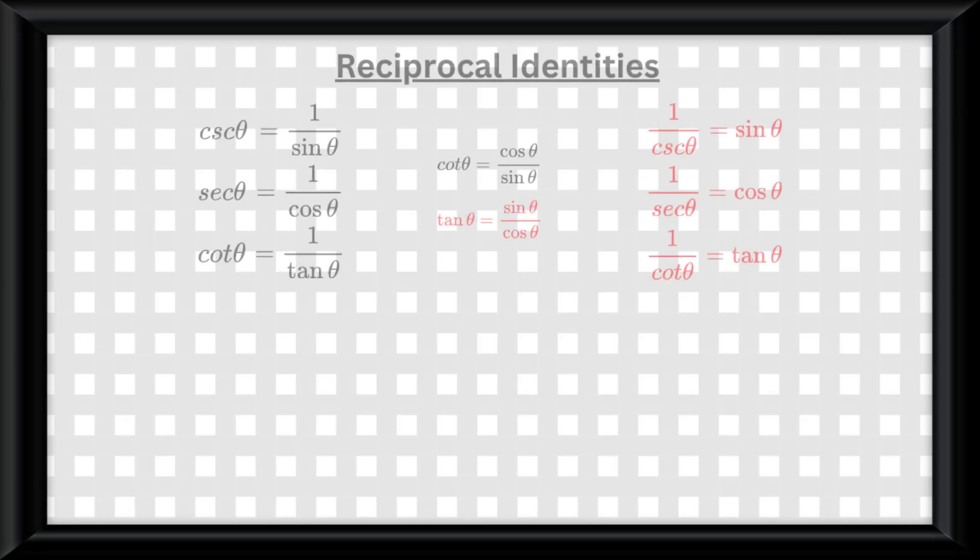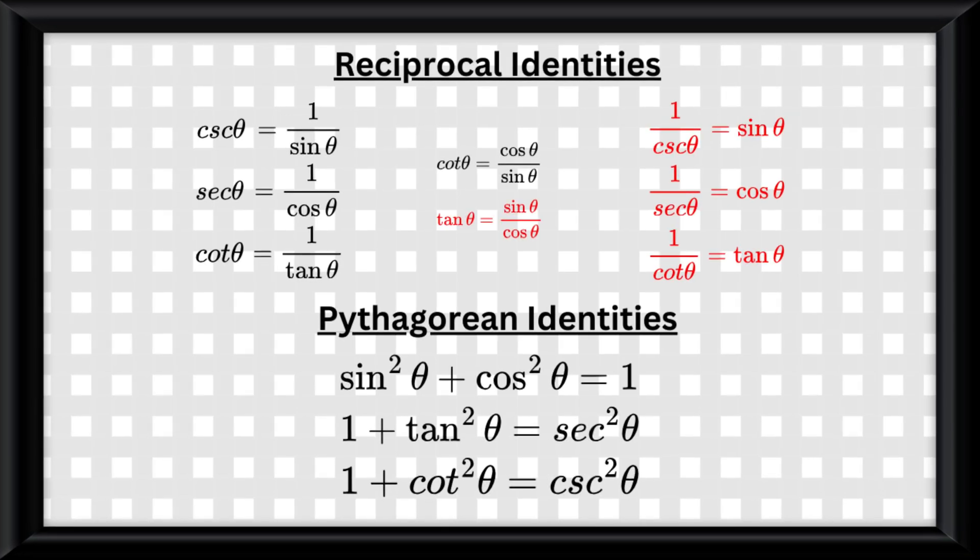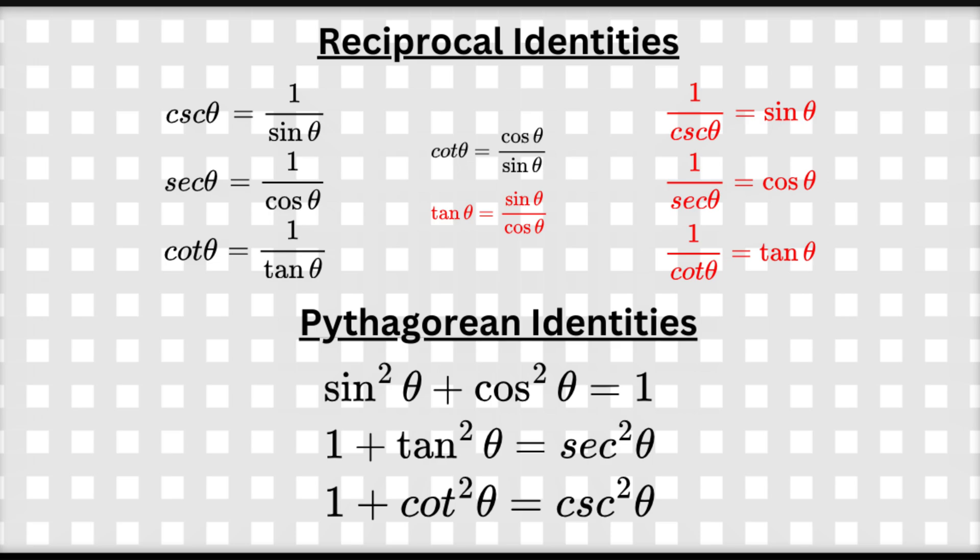So we already know the reciprocal identities from last video, now we need to add another set of identities known as the Pythagorean identities. All of these identities can be used to prove an identity true.